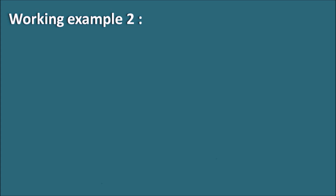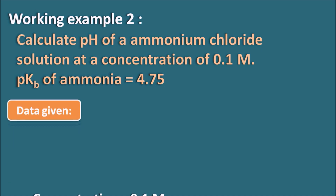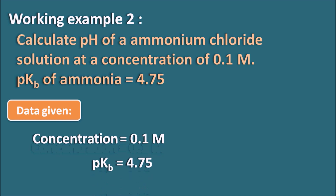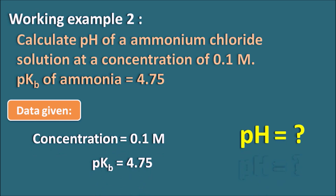Working example 2: Calculate the pH of an ammonium chloride solution at a concentration of 0.1 M. The pK_b of ammonia is 4.75. Data given: concentration = 0.1 M, pK_b = 4.75.